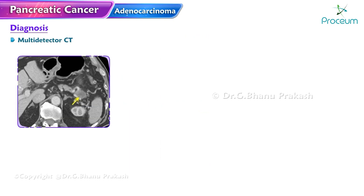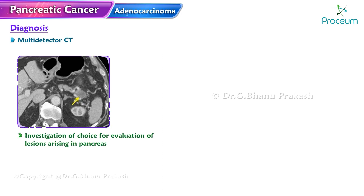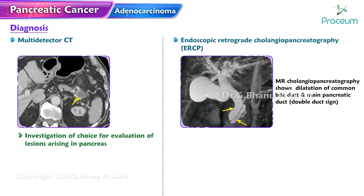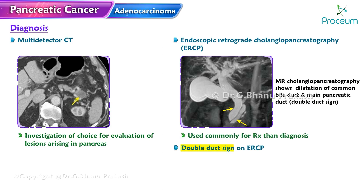Multi-detector computed tomography is the investigation of choice for evaluation of lesions arising in the pancreas. Endoscopic retrograde cholangiopancreatography (ERCP) is used more commonly for treatment than diagnosis. The double duct sign on ERCP is highly suggestive of pancreatic head cancer.